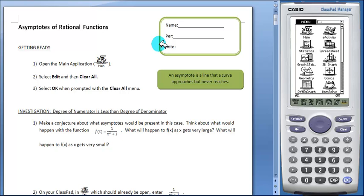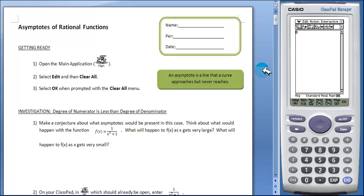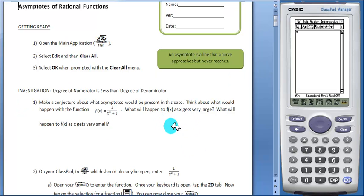This activity is designed to lead students through an exploration of asymptotes. To begin, students will need to open the main application from the menu and then make a conjecture before beginning their first investigation.